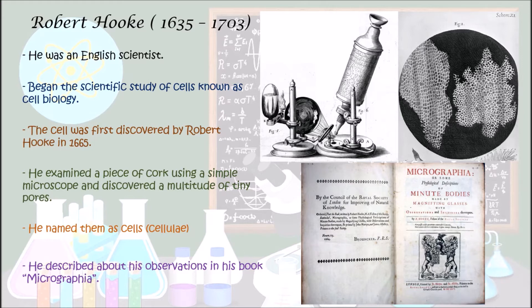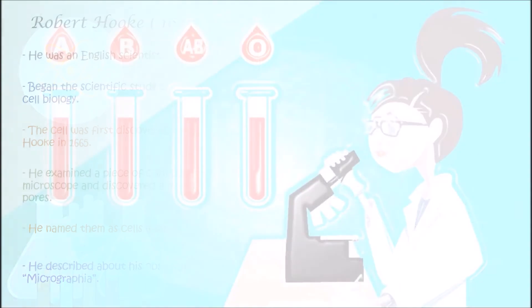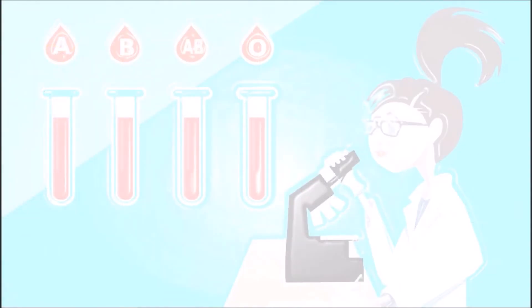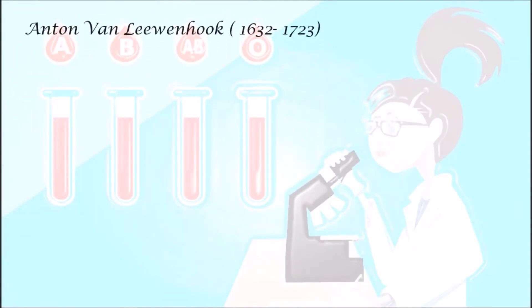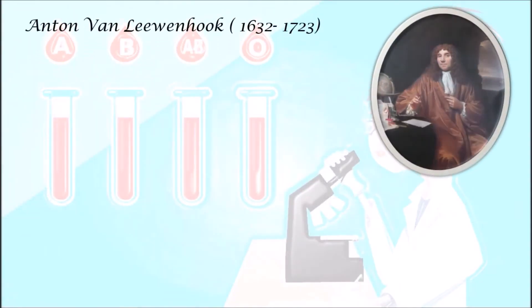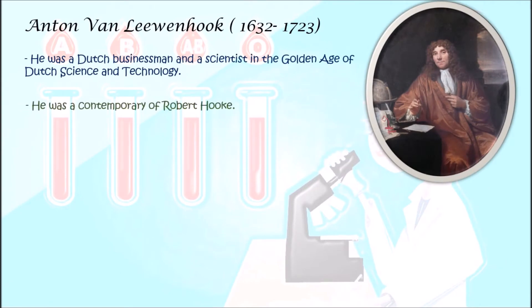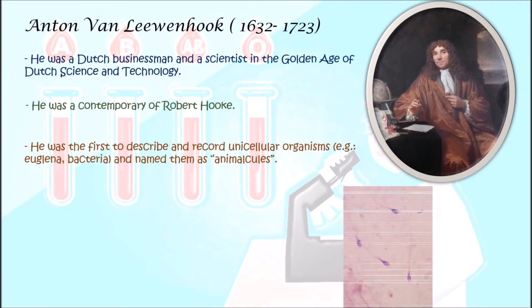Robert Hooke was unable to observe the subcellular structures like the nucleus and other organelles found within a cell. He described his observations in his book called Micrographia.